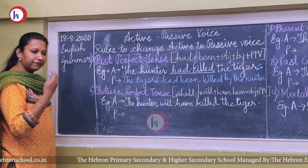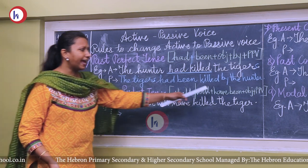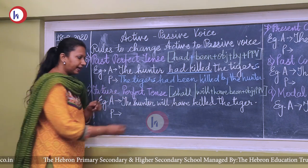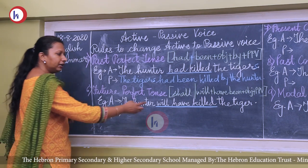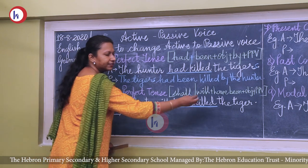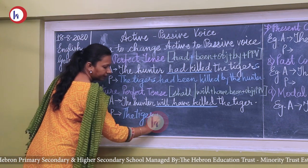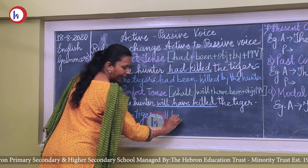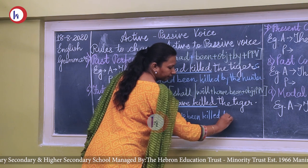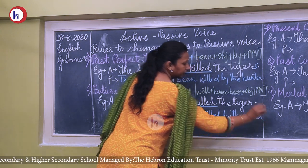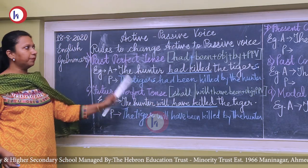For future perfect tense, use 'will have' and add 'been'. Example: 'The hunter will have killed the tiger.' The verb is 'will have killed'. The passive voice becomes: 'The tiger will have been killed by the hunter.' Concentrate on the verb: 'will have' changes to 'will have been' in future perfect tense.